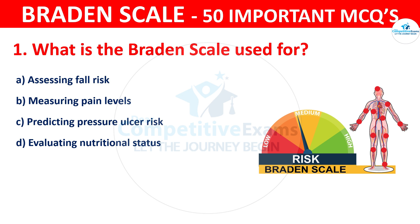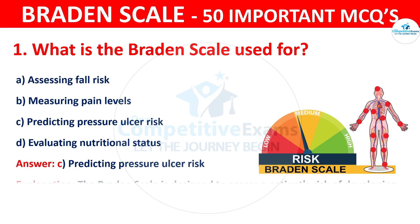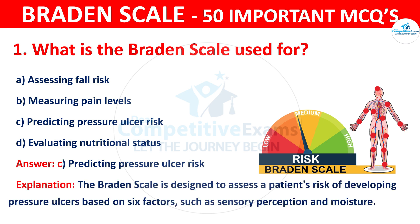The correct answer is C — predicting pressure ulcer risk. The Braden scale is designed to assess a patient's risk of developing pressure ulcers based on six factors such as sensory perception and moisture.